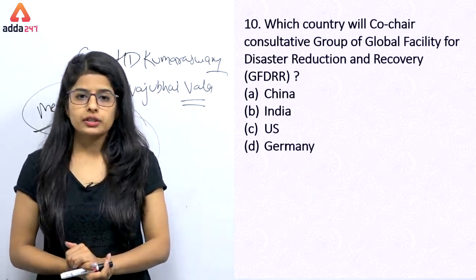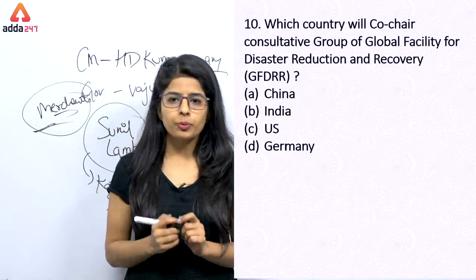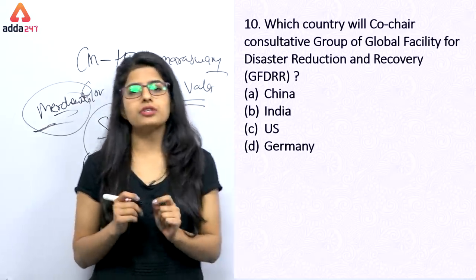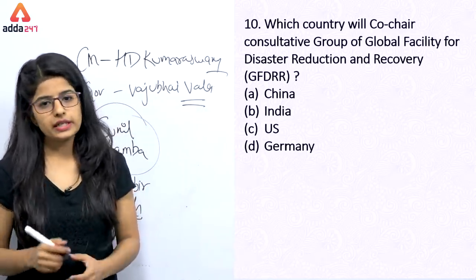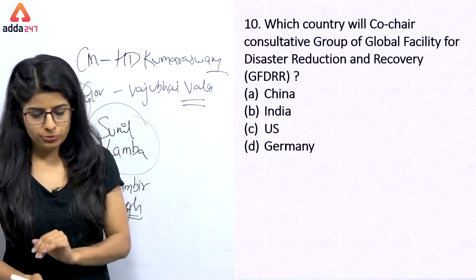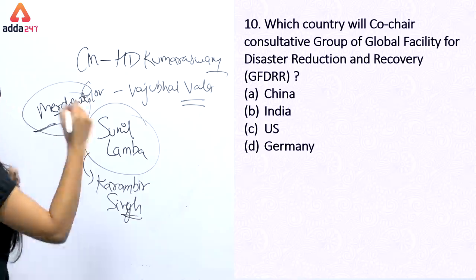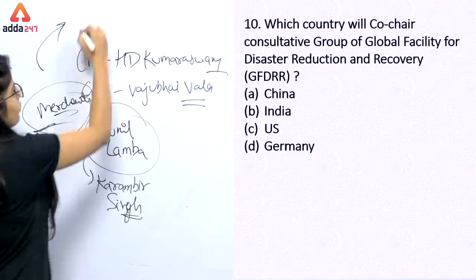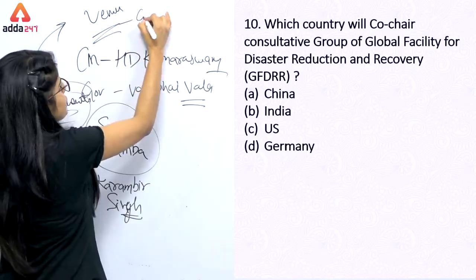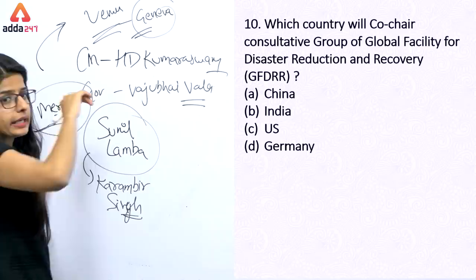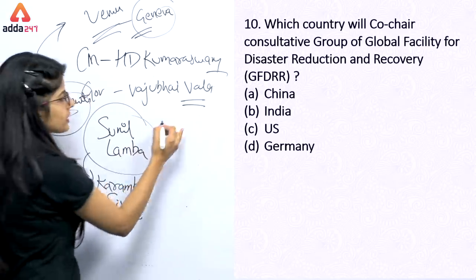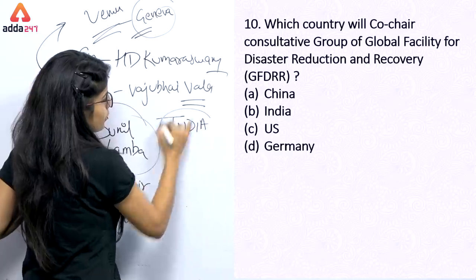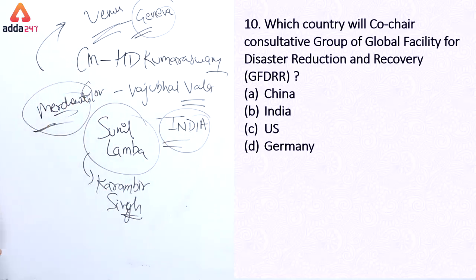Which country will co-chair the consultive GFDRR — that is the Global Facility for Disaster Reduction and Recovery? The venue of this meeting will be Geneva. But the country that will co-chair it is India. So option number B will be the correct answer here.